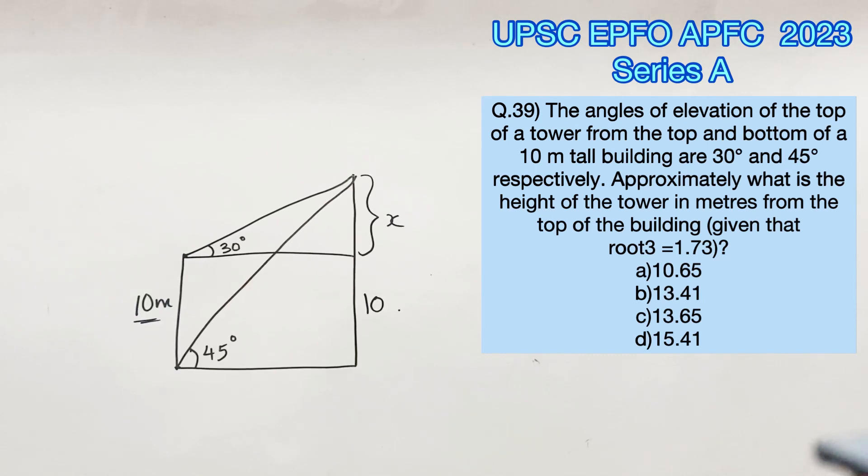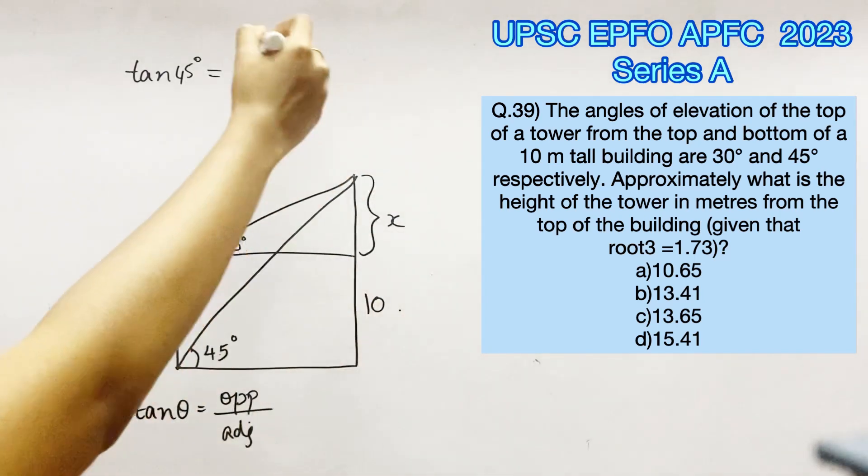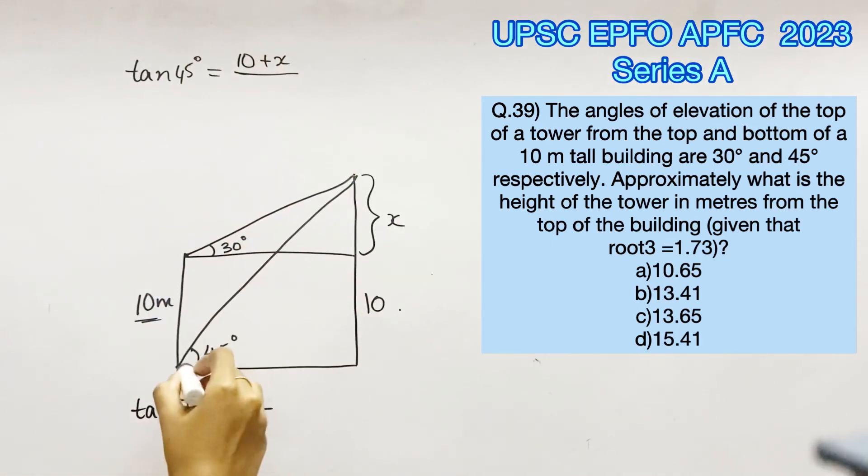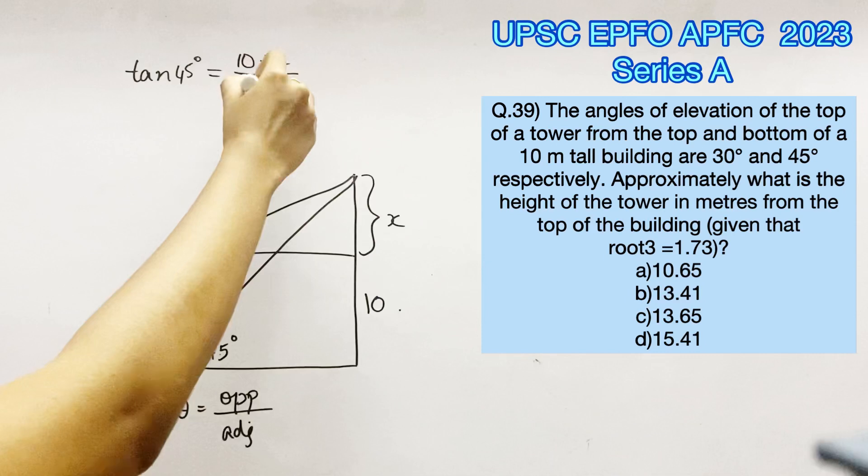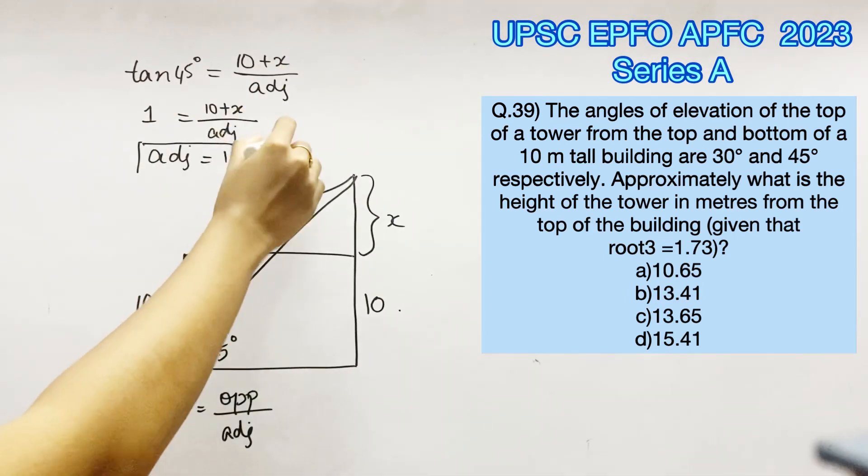Now we will have to use the trigonometric ratios. We know that tan θ equals opposite by adjacent. So if you consider the big triangle, tan 45 equals opposite by adjacent. Here opposite is 10 plus x. We don't know the value of the adjacent side so we can consider it as is. The value of tan 45 is 1, therefore solving for this we get adjacent equal to 10 plus x.